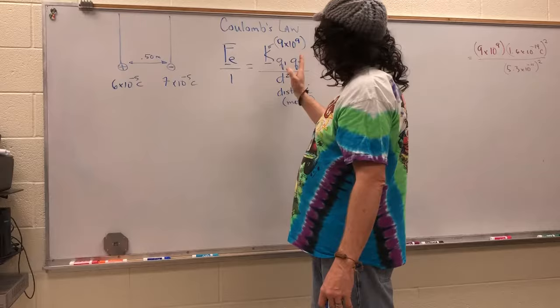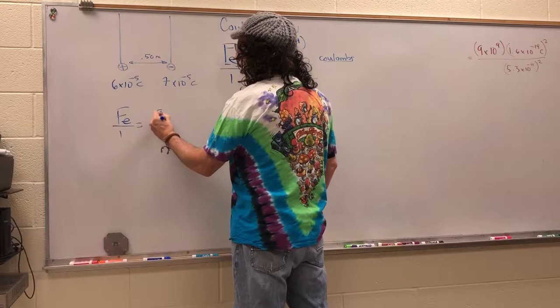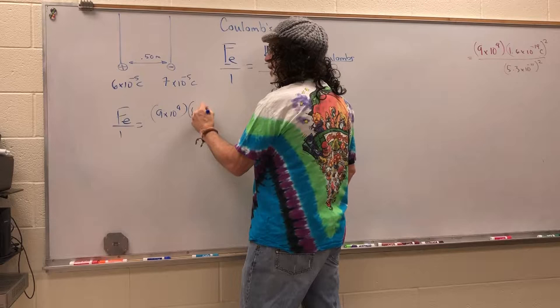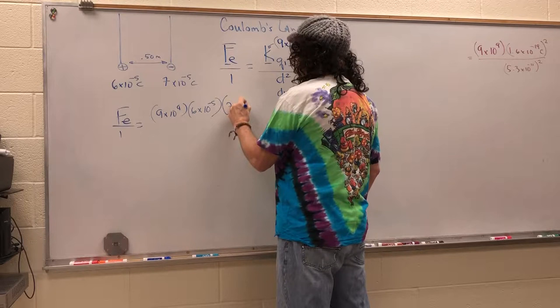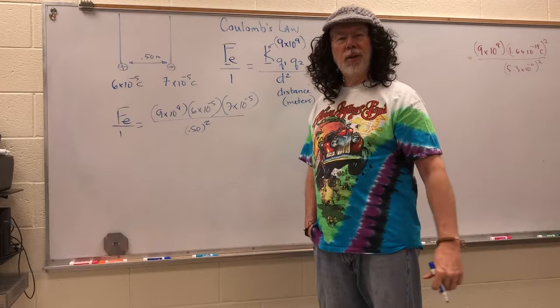Now we just have to substitute that into the equation and solve. The electrical force is equal to 9 times 10 to the 9th times 6 times 10 to the -5 times 7 times 10 to the -5, all divided by 0.50 squared. That's squared, there we go.